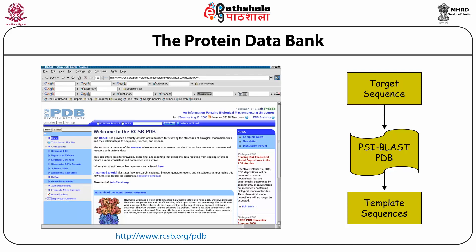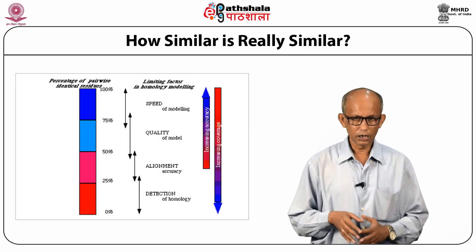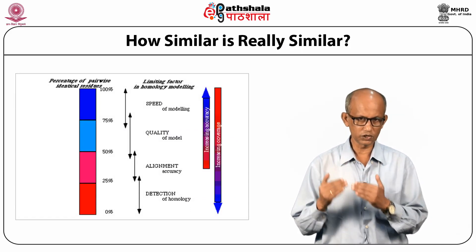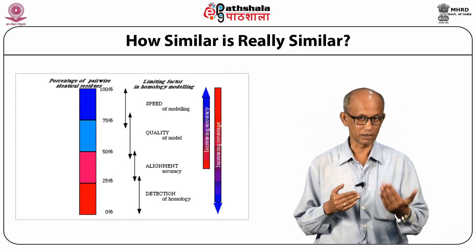One of the requirements of homology modeling is to get a good number of template structures from the PDB. To find the most suitable template, you take your target sequence and use sequence search techniques like PSI-BLAST using all the sequences taken from all possible templates in the PDB. Whichever protein gives you a significant hit — you take out the corresponding structures as your template. The sequence of your template must be rather similar to your target sequence.